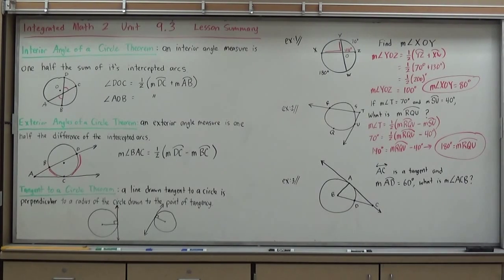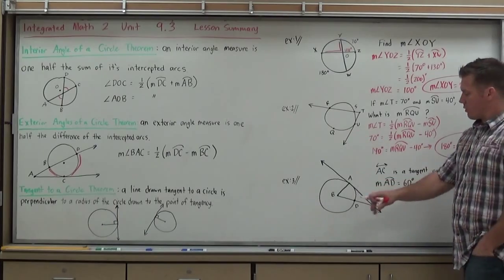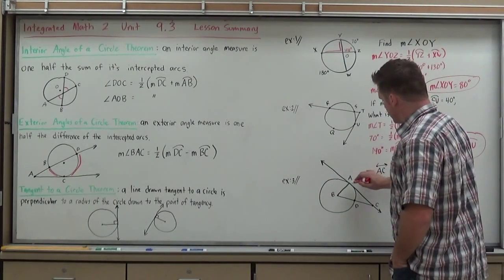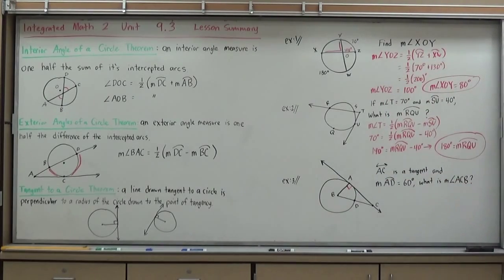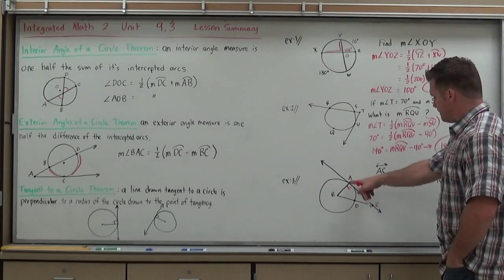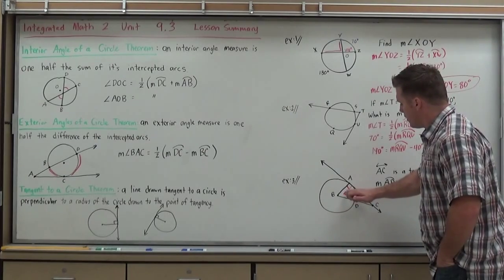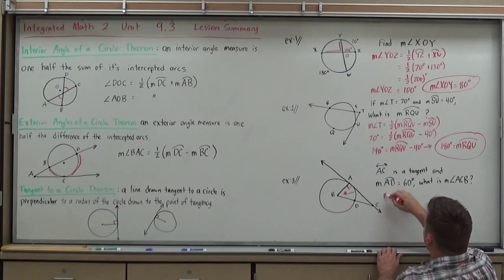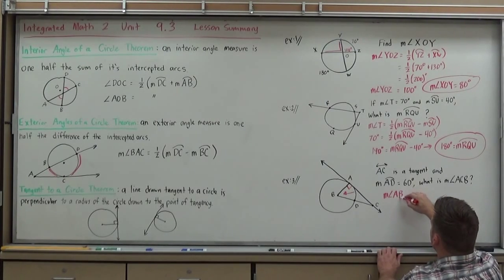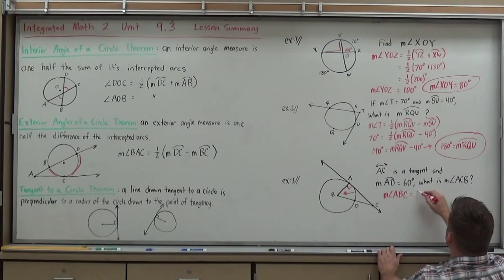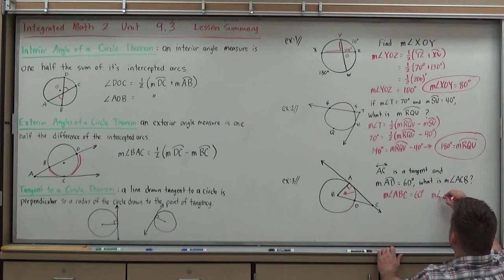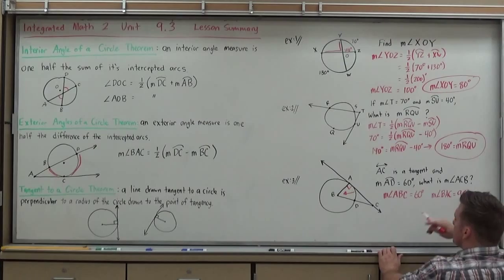Okay, last example here. AC is tangent to the circle, circle B. BA is a radius, then. And the measure of arc AD is 60 degrees. What is the measure of angle ACB? Well, as soon as I have a tangent in any sort of radius, I know now from my last theorem, tangent to the circle theorem, that this angle form has to be a right angle. Now, I have a triangle, which means if I can get two of these angles, I'm good to go. Possibly even an exterior angle in some situations, I'll be good to go. But, let's see what I can get. They gave me arc AD.